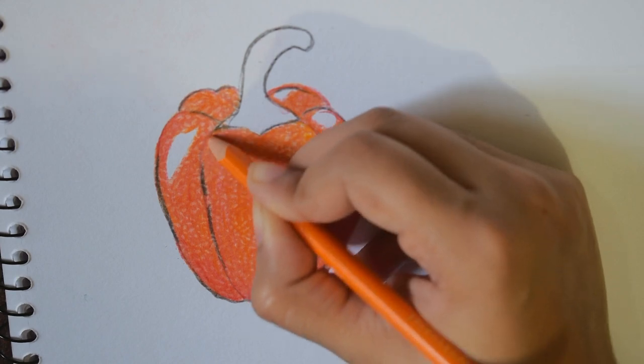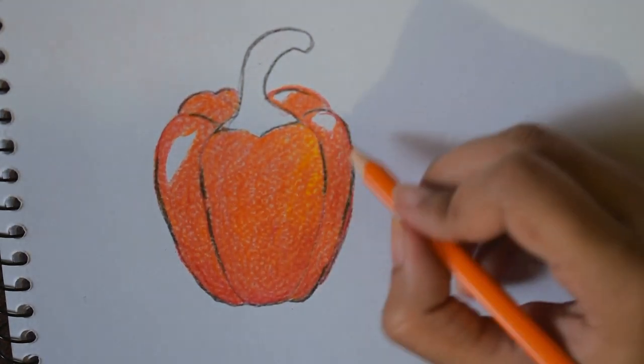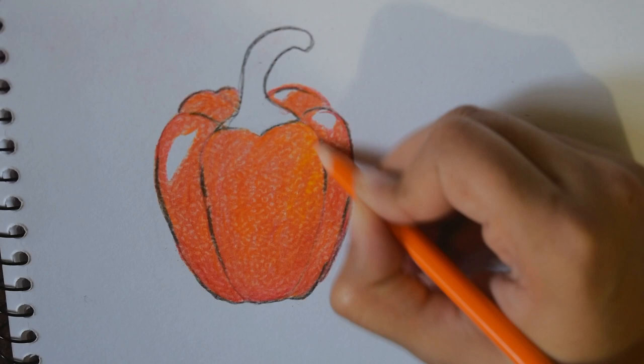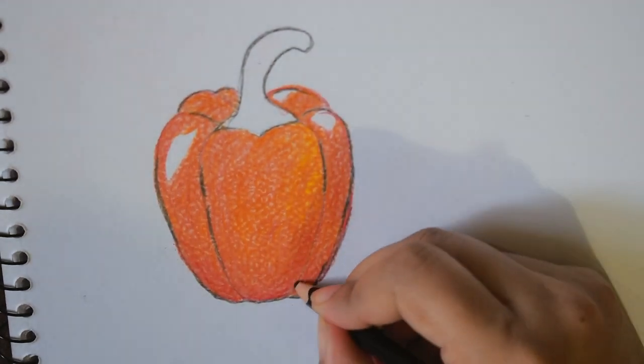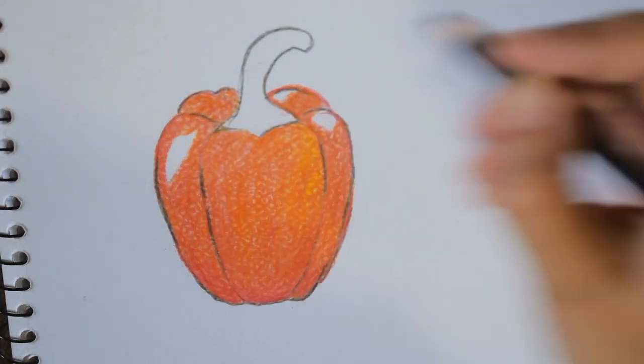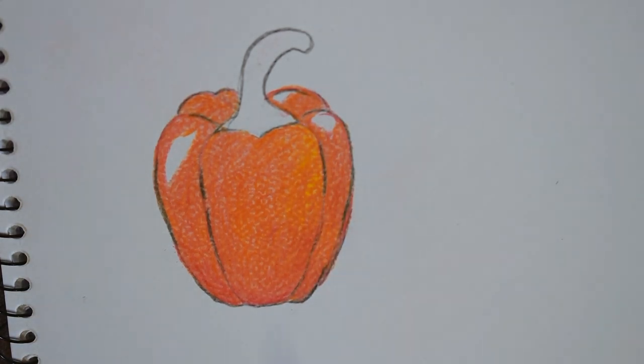I always used to think, how does this drawing look so saturated? And now I know it's just layers and layers of colors with different pressures.